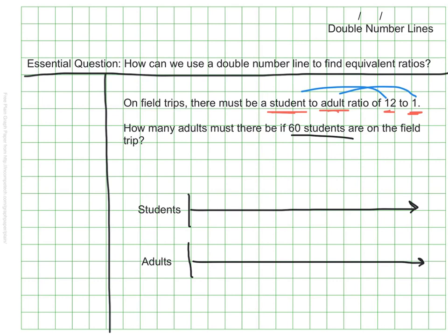With my number lines, I'm going to assign one number line to be the numbers that represent the number of students. My other number line will represent the number of adults.